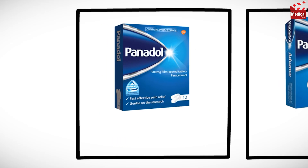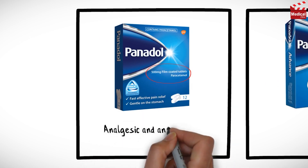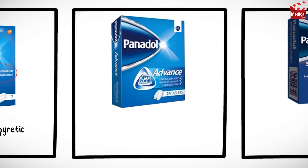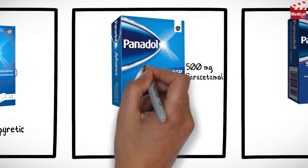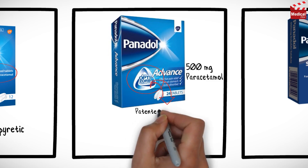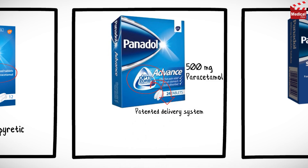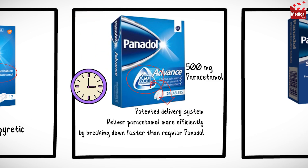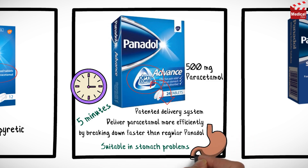The first type is regular Panadol, with the blue box, containing 500 mg paracetamol, working as an analgesic and antipyretic. There is also Panadol Advance, which is 500 mg paracetamol with the Optizorb formulation — a patented delivery system that delivers paracetamol more efficiently by breaking down faster than regular tablets. This formulation starts to release its medicine in about 5 minutes and is suitable for people at risk of stomach problems.